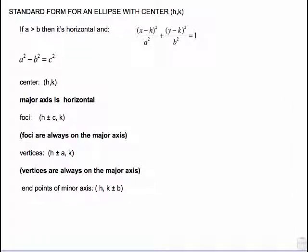This is pre-calc section 7.2 part 2 on ellipses. Now we're going to look at what happens when the ellipse is not at the origin.